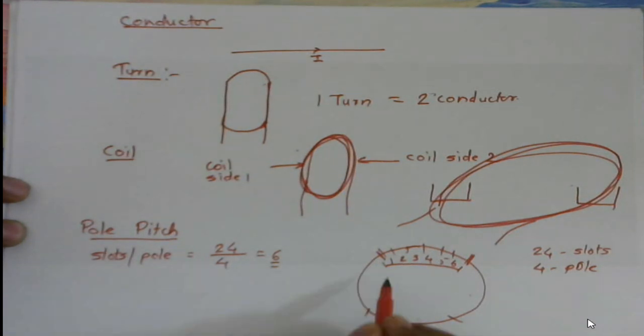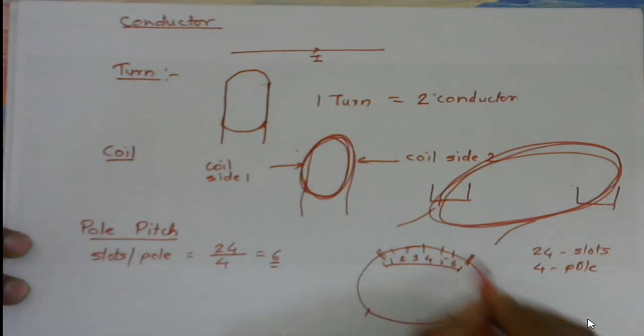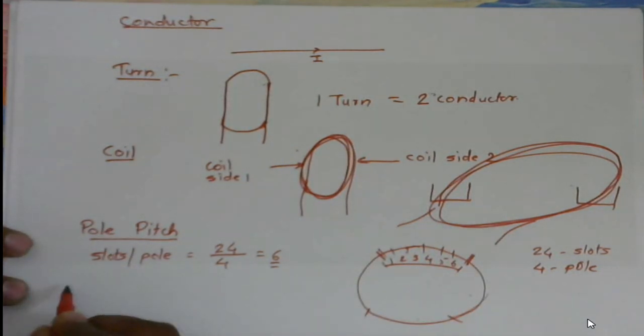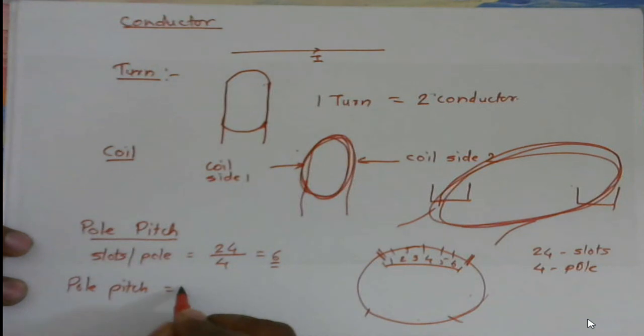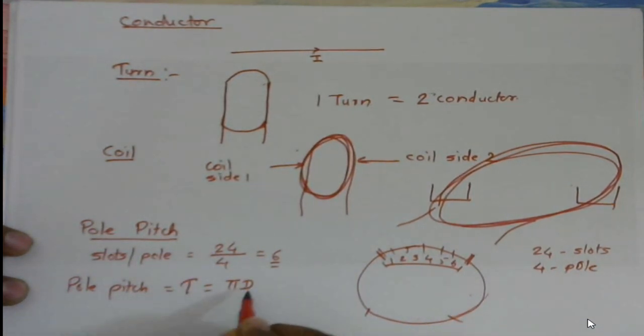This pole pitch can be calculated in terms of distance also. Like the perimeter of this circle is πd, so the pole pitch is generally denoted by τ, it is equal to πd divided by p, where d is nothing but the diameter and p is nothing but the number of poles. So in this way also we can calculate the pole pitch.